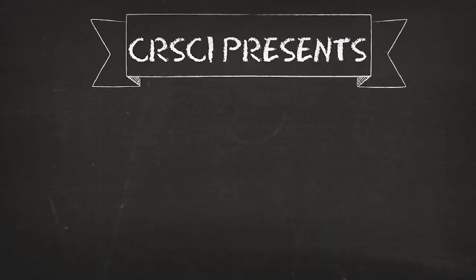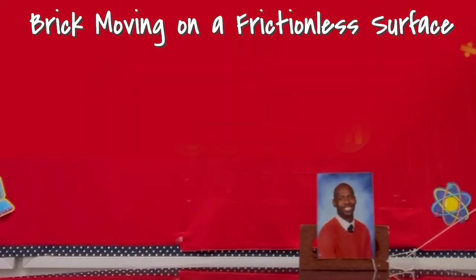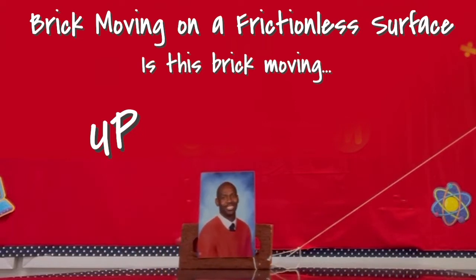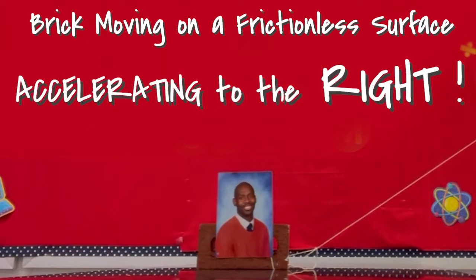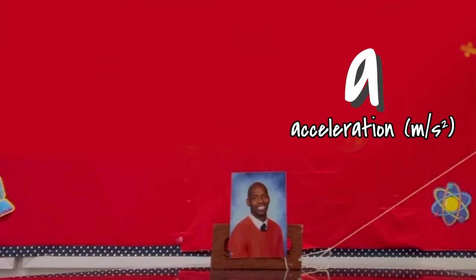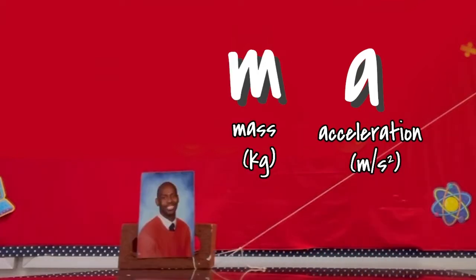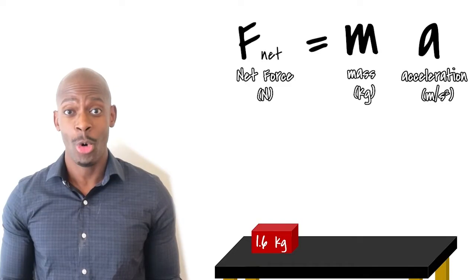Here we have a brick that's moving on a frictionless surface. Is this brick moving up in the air or to the right? It's just accelerating to the right. Therefore, if we wanted to talk about the amount of acceleration this brick is experiencing, we have to know the mass of the brick and the total amount of force acting on the brick. So this brick is 1.6 kilograms. That's the mass. I have a spring scale that says I'm pulling at 8 newtons to the right.